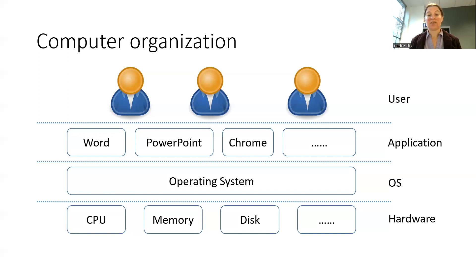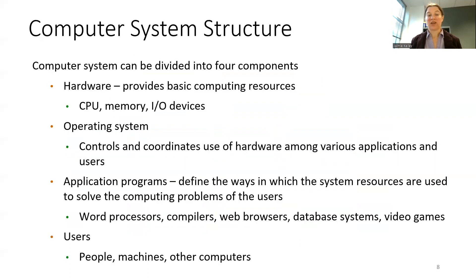The operating system interfaces between those application programs and the resources they need to run, such as central processing unit time, memory, disk, and more in that hardware section. When talking about the system structure of the computer, we refer to four different components. At the bottom layer we have the hardware, which provides those basic computing resources such as CPU time, memory interfacing, and input and output devices such as the hard disk.